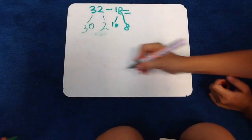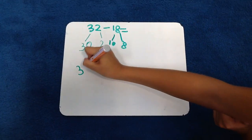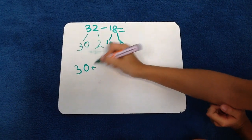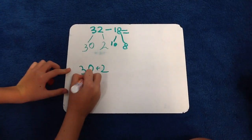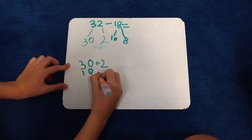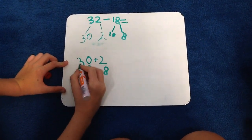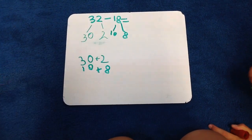Then we verify: 30 plus 2 is still 32, and 10 plus 8 is still 18.